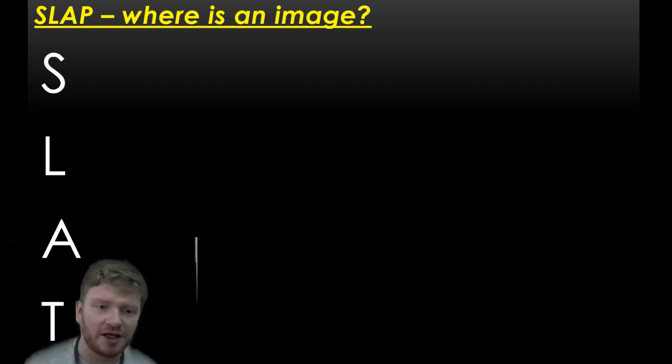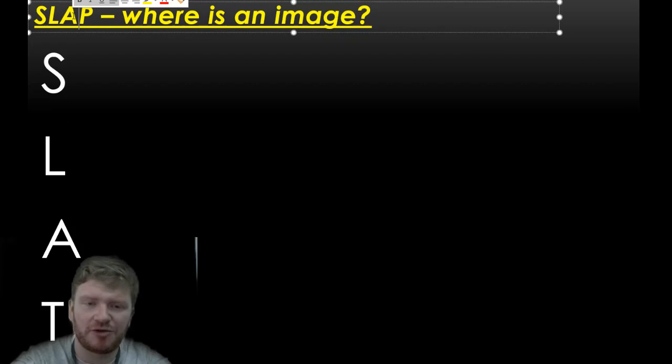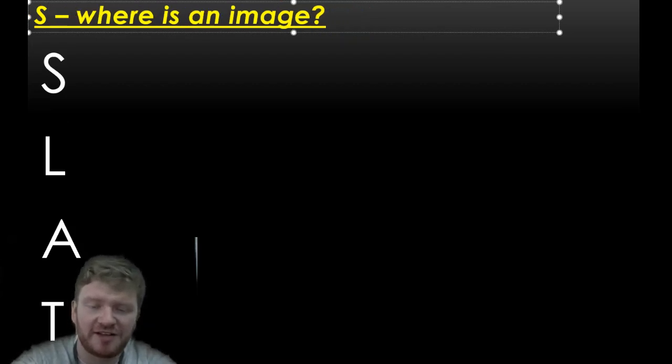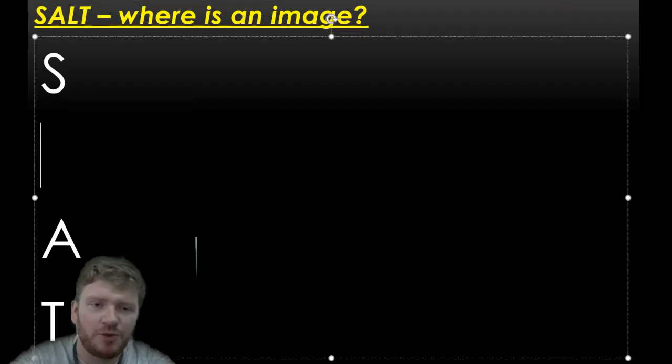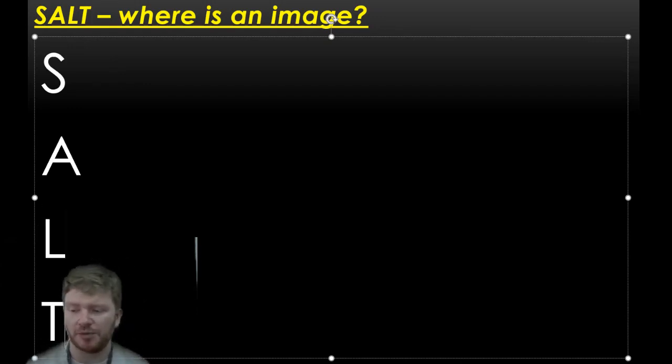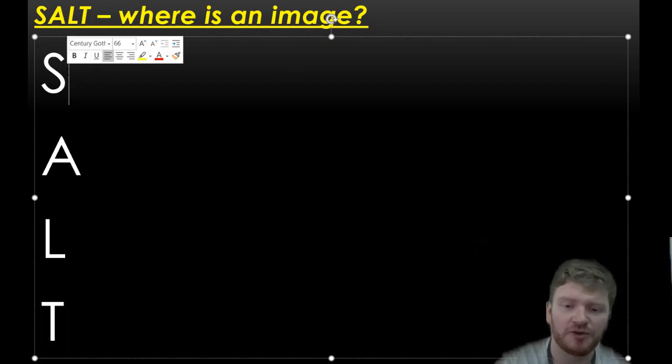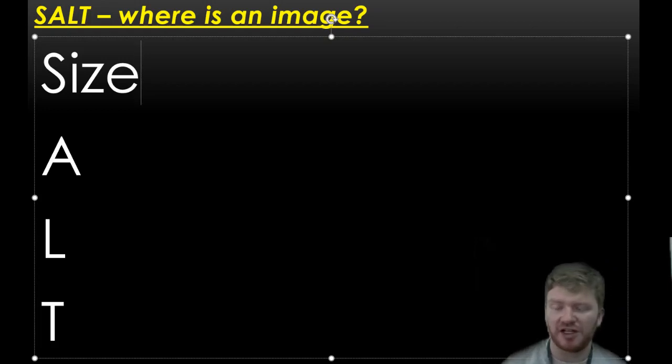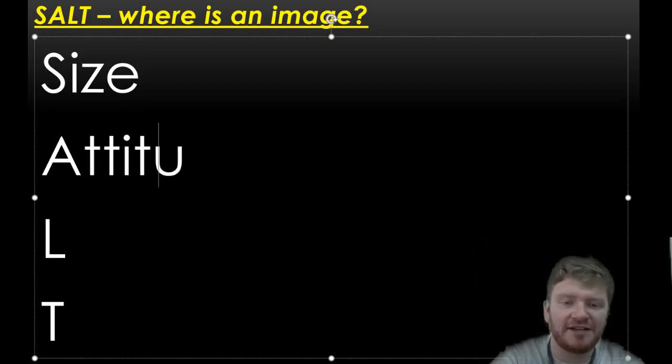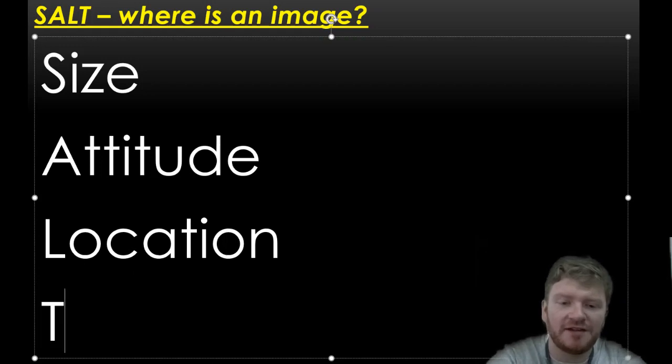Now, when we look at this, when we work out where an image is being formed and describe an image, we can use the acronym S.O.L.T. And S.O.L.T. is something that you're going to use to help you understand the four key things that you need to say about an image. So you have S for the size of the image, O for its orientation or attitude, L for its location, and T for the type.